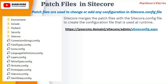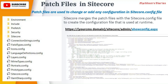If you add patch files, you can see the final configuration by going to your website slash Sitecore slash admin slash showconfig. If you try to access showconfig, it will show you the final configuration which is applied on your website.